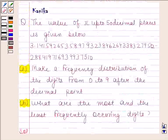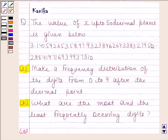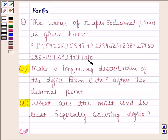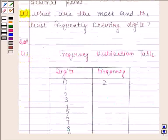Now again look at the value of pi. 1 appears 5 times. So frequency of 1 is 5.